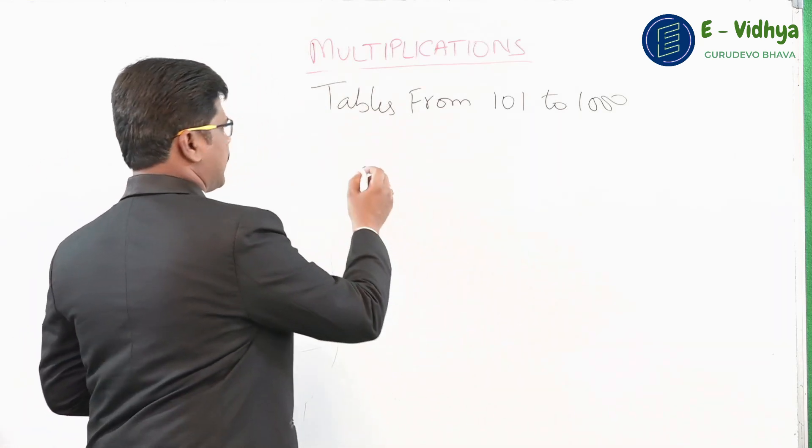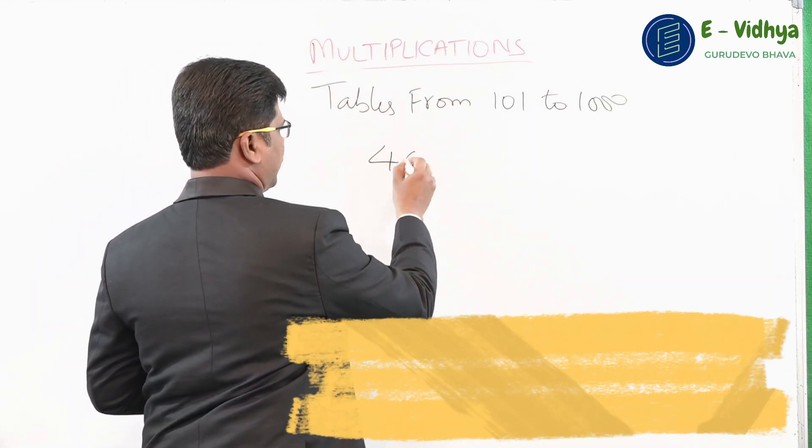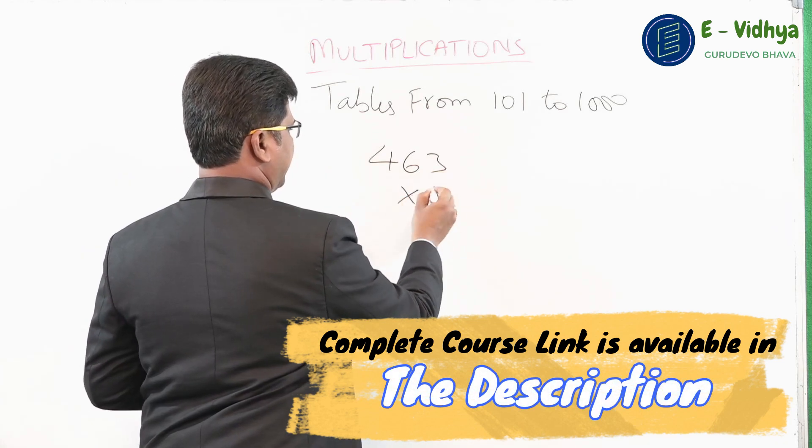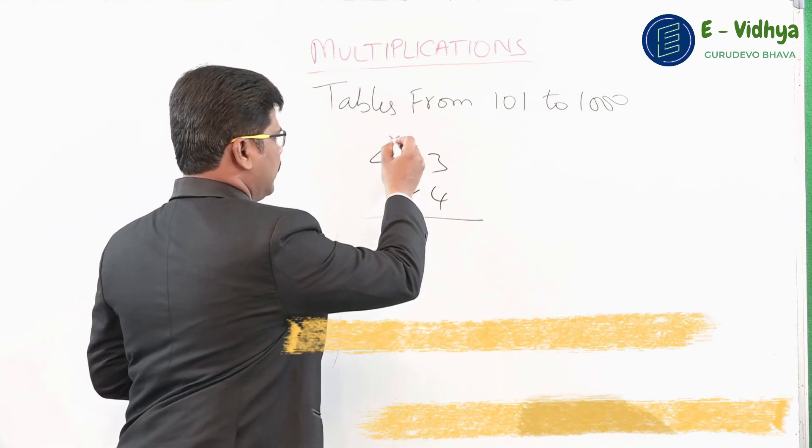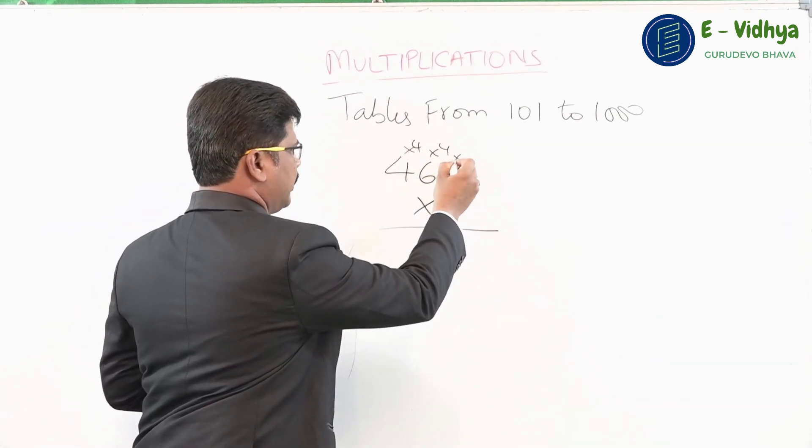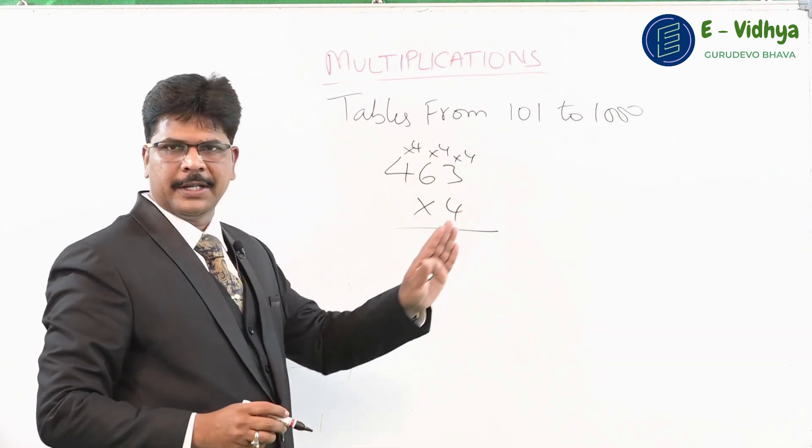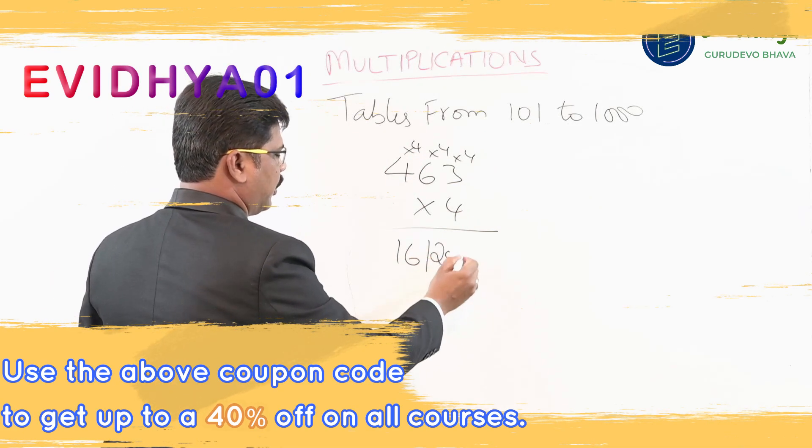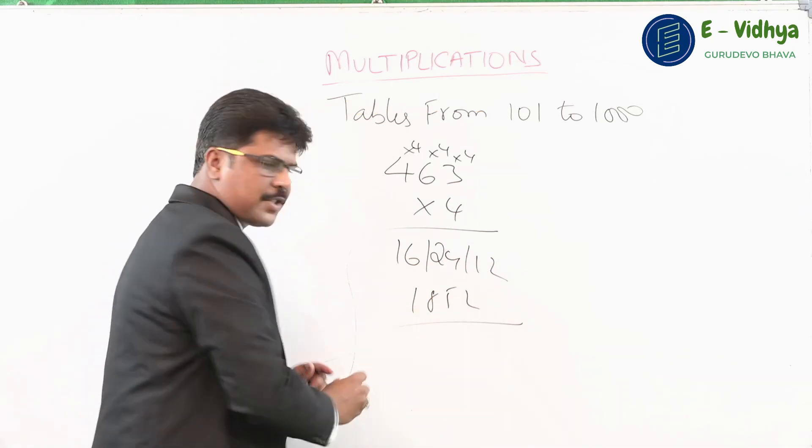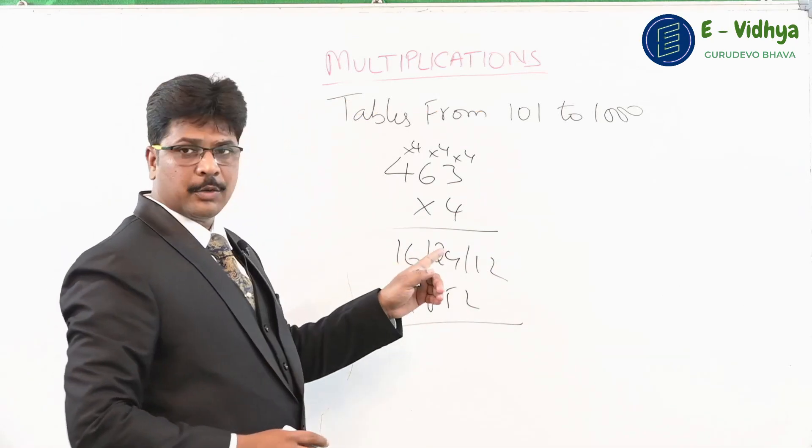For example, 463 multiplied by 4. The 4 gets distributed to all the numbers at the top. Four fours are 16, four sixes are 24, four threes are 12. Now balance it: 1852. That's the answer.